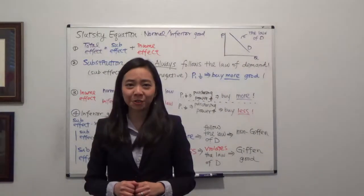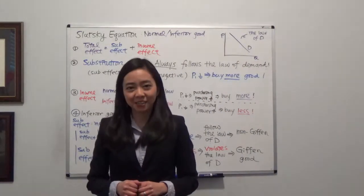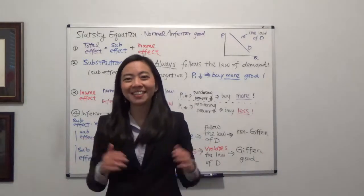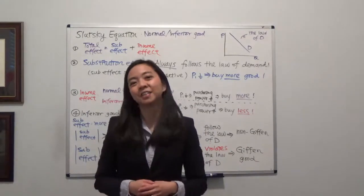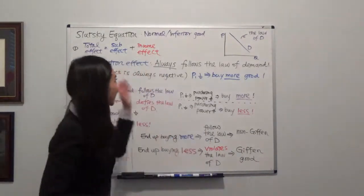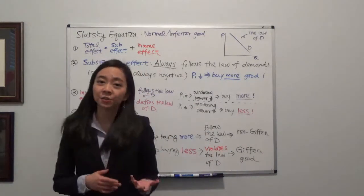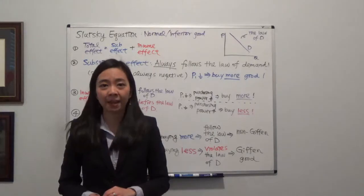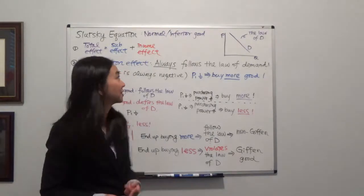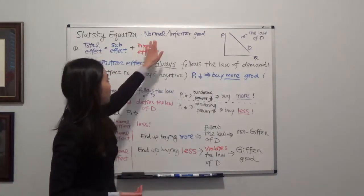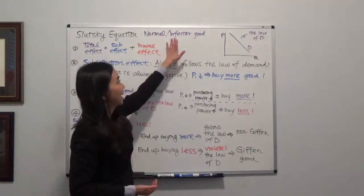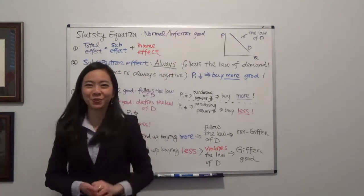Hello everyone, my name is Iris Rons with Jalini Wanru. Today we're going to continue to talk about the Slutsky equation. In particular, I'm going to compare and contrast the difference between normal good and inferior good.